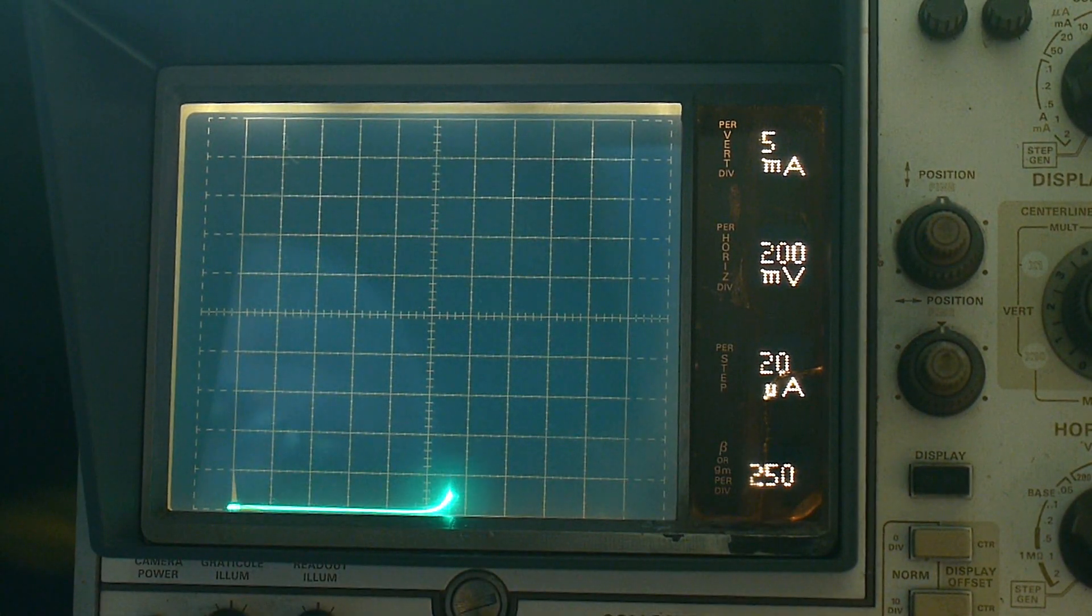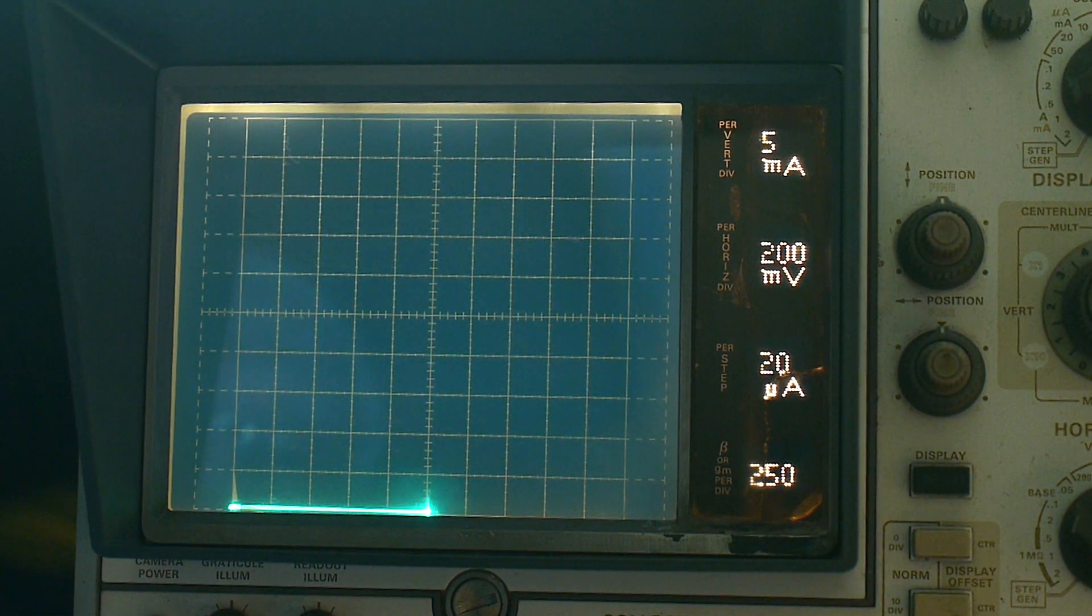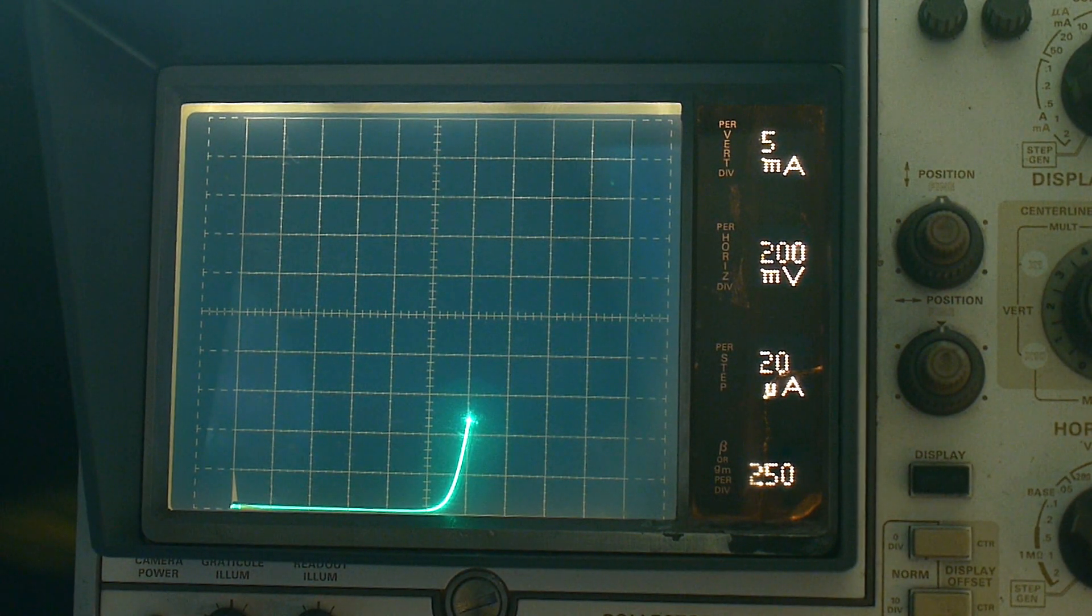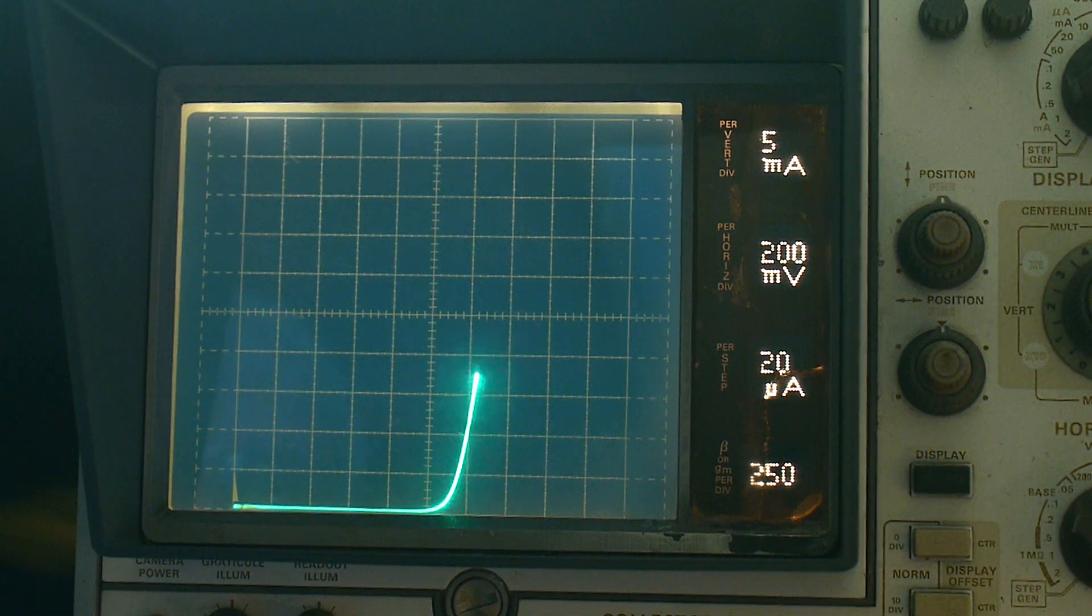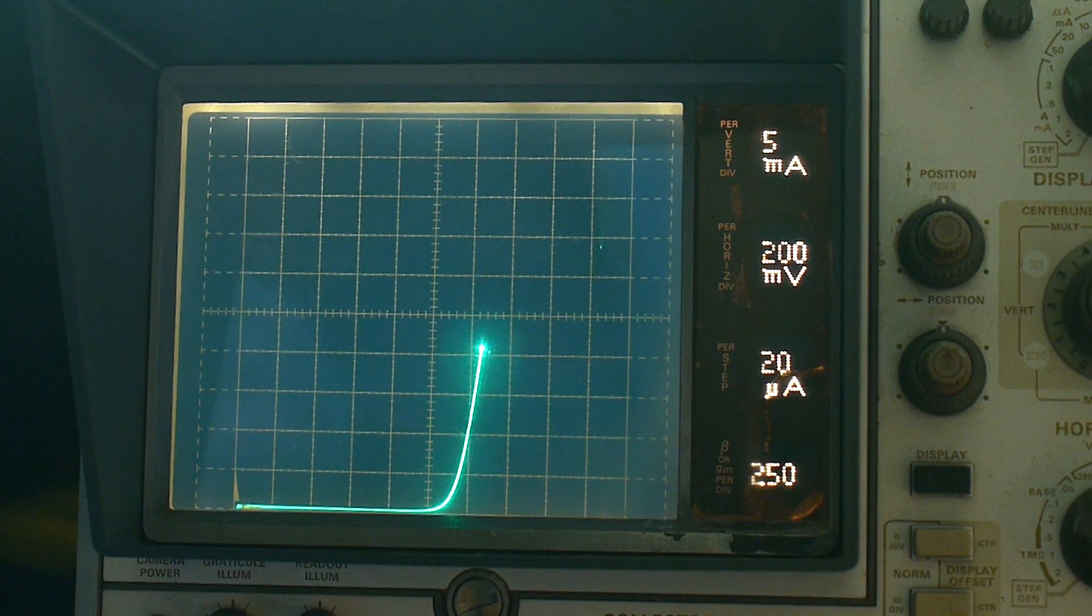All right. Here's the LED on the curve tracer. 2, 4, 6, 8, 10, 1.2 volts is about 12 milliamps. So that's what the LED looks like. About a 1.25 turn on voltage. All right.